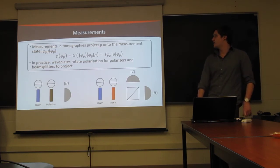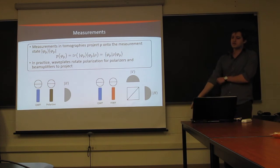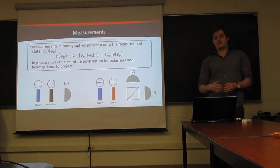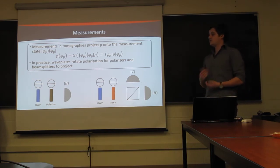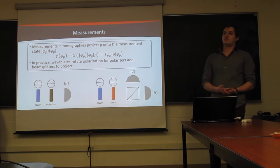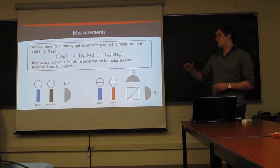So, in an experiment, how are we actually going to measure any of these states? The answer is basically that we just project our state, whatever state we have, onto some set of known states. And, to do that, we'll use quarter wave plates, half wave plates, and polarizers to rotate whatever our desired projection state is onto something that we can use a polarizer or a PBS to project out, and then put it into a detector.